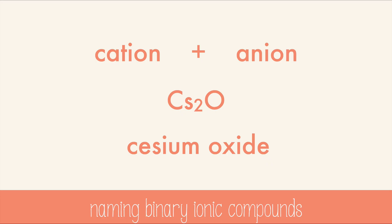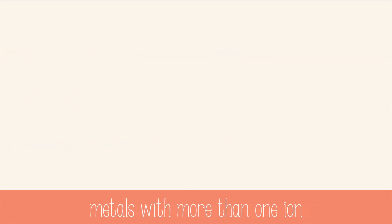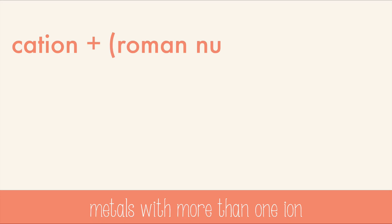But not all ions are quite this easy to name. Some metals have multiple ions that could form, like copper, because copper can have a plus one or a plus two charge. We have to add another small step in naming: you start with the cation, then you say the Roman numeral from the stock name, and then lastly you say the anion.